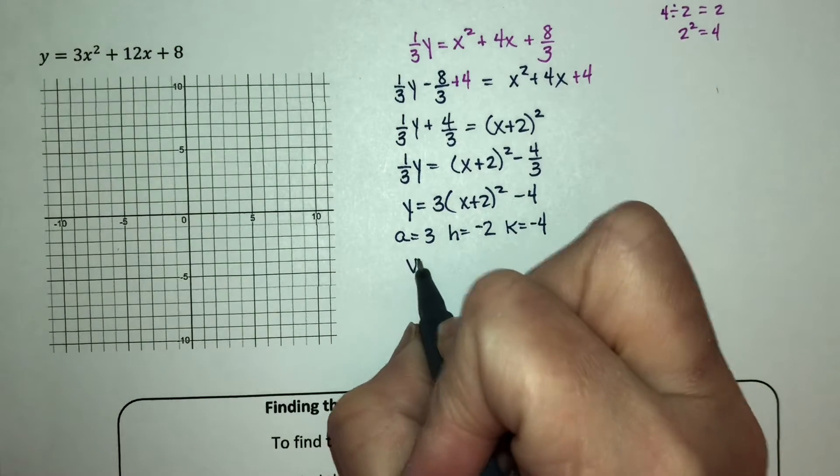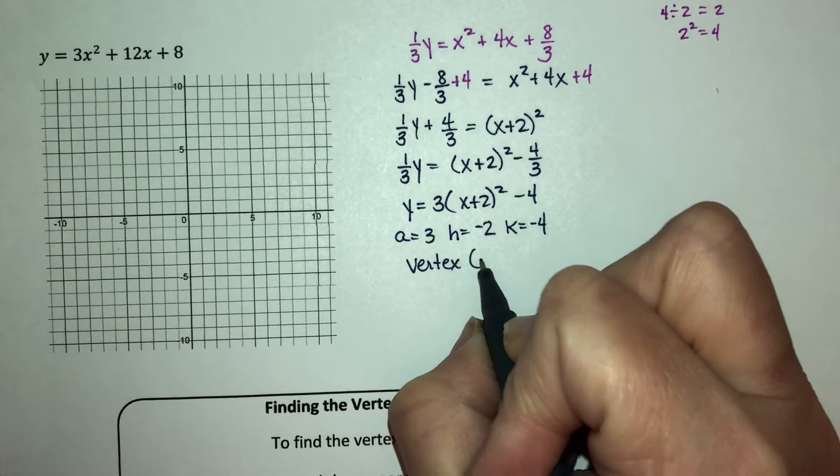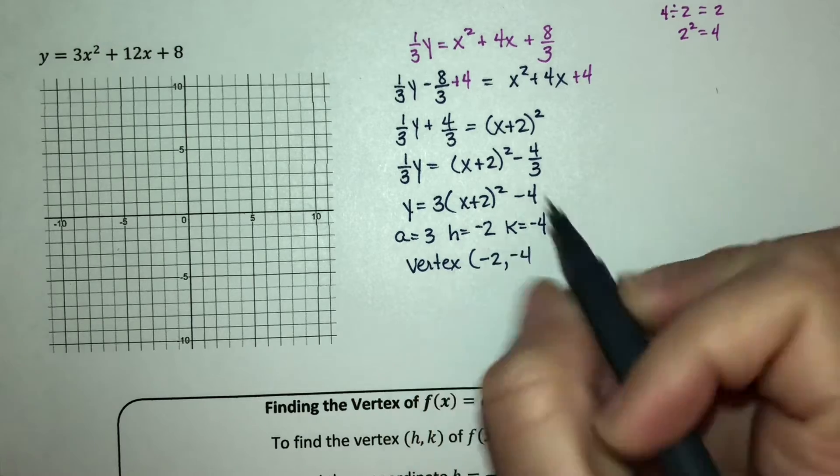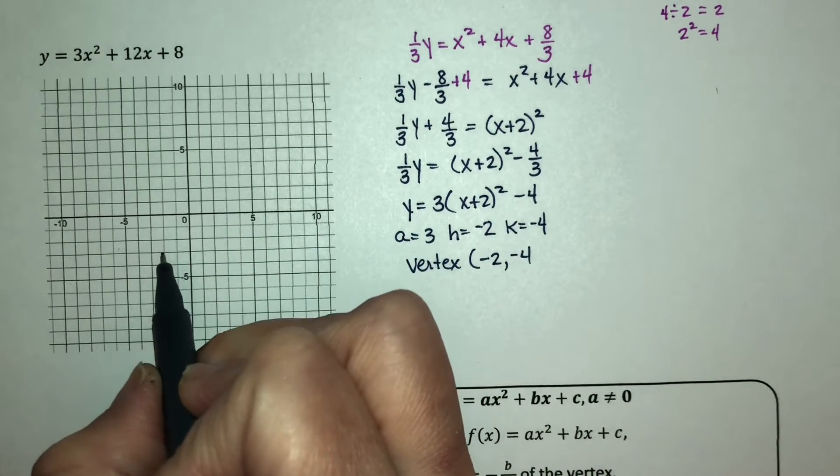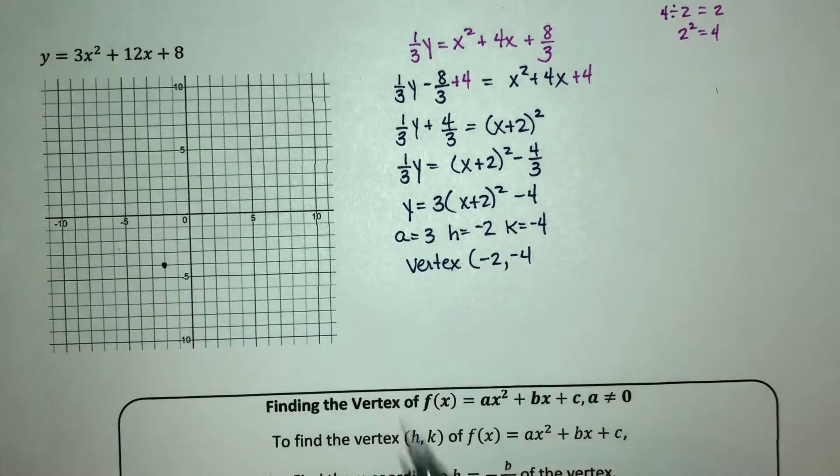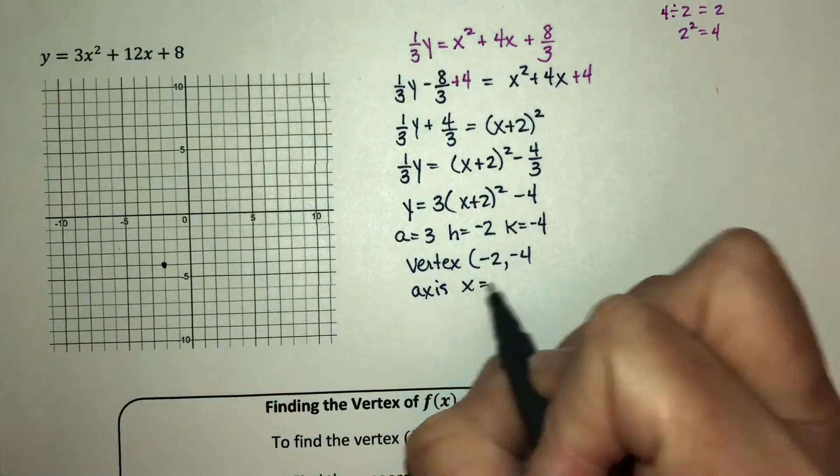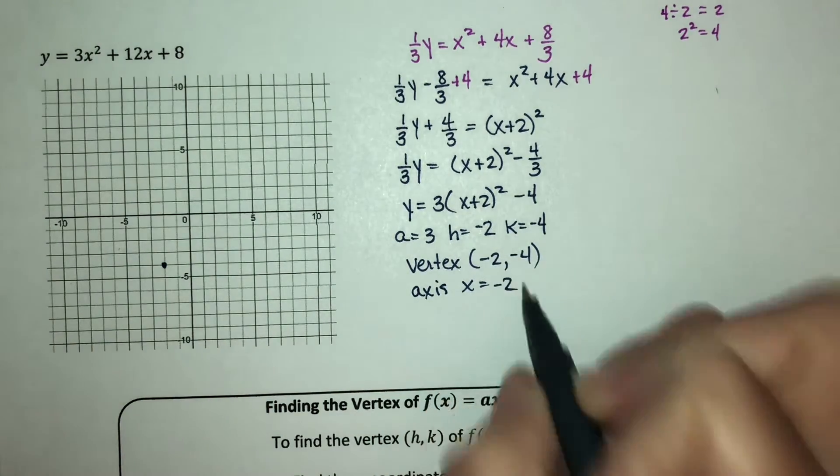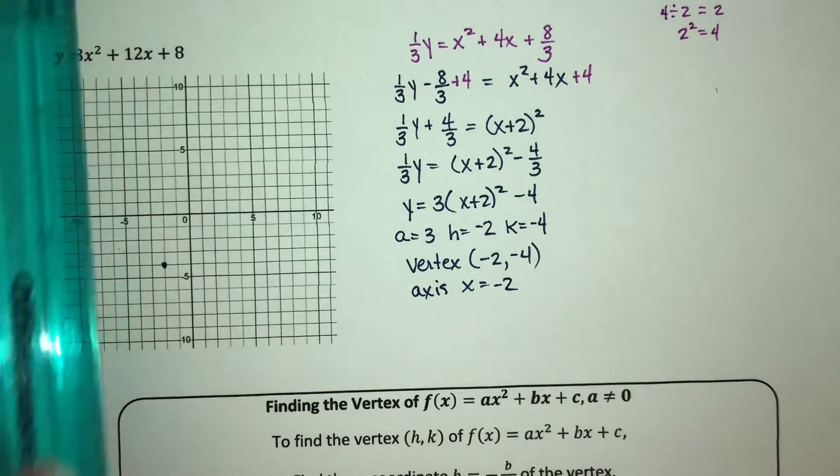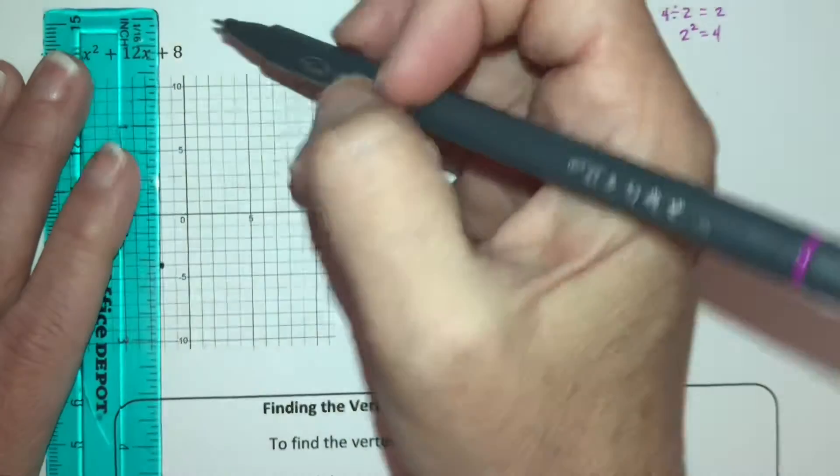So my vertex is the point (-2, -4). My axis of symmetry is going to be x = -2. So I'm going to put this in with a dotted line here.